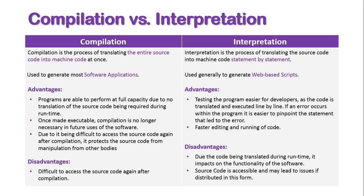I hope this has been a good introduction to the two types of translation methods for converting source code into machine code — compilation, where everything is translated beforehand and then the program runs, and interpretation, where the program, while in use, gets interpreted statement by statement as per the sequence of the software.